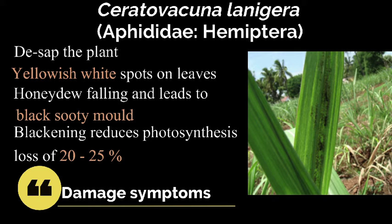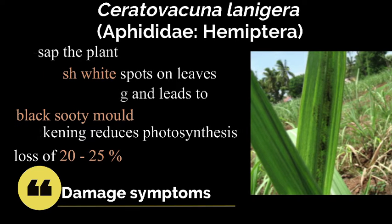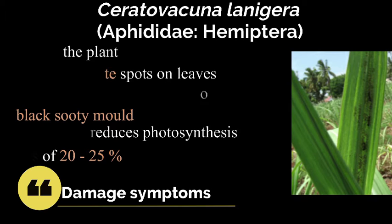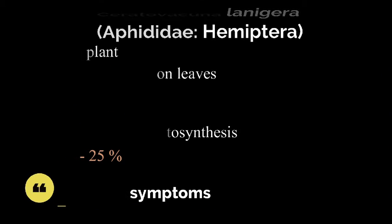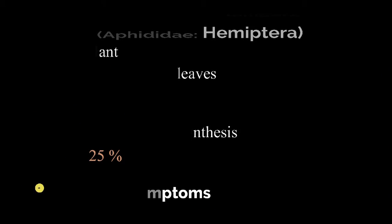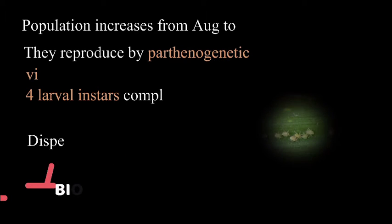Damage symptoms: nymphs and adults colonize the lower leaf surfaces of the plants. The leaf shows yellowish-white spots which become brittle and finally dry up. Honeydew falling encourages black sooty mold growth over them. The blackening of active green leaves impairs the photosynthetic efficiency of the plant. A loss of 20 to 25 percentage in yield will occur.